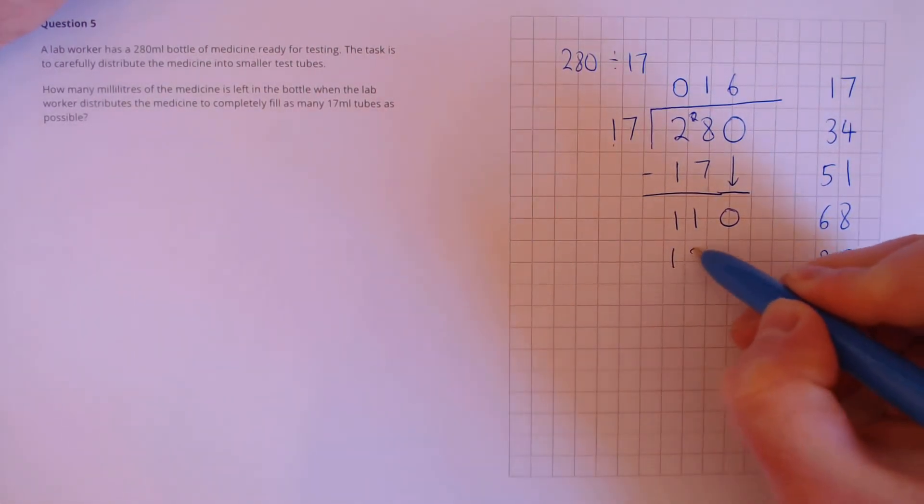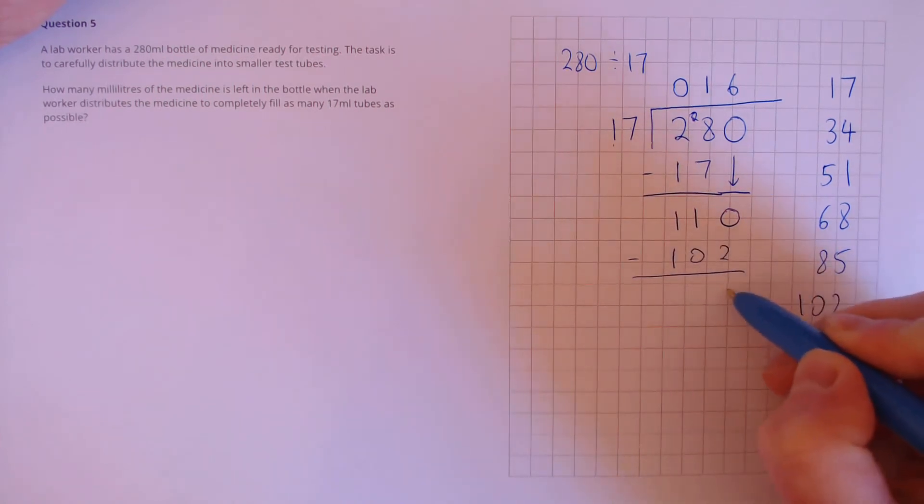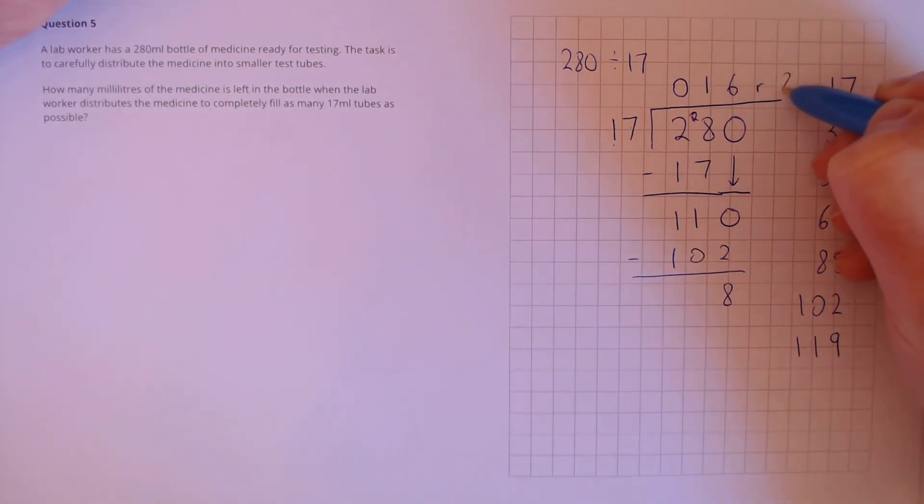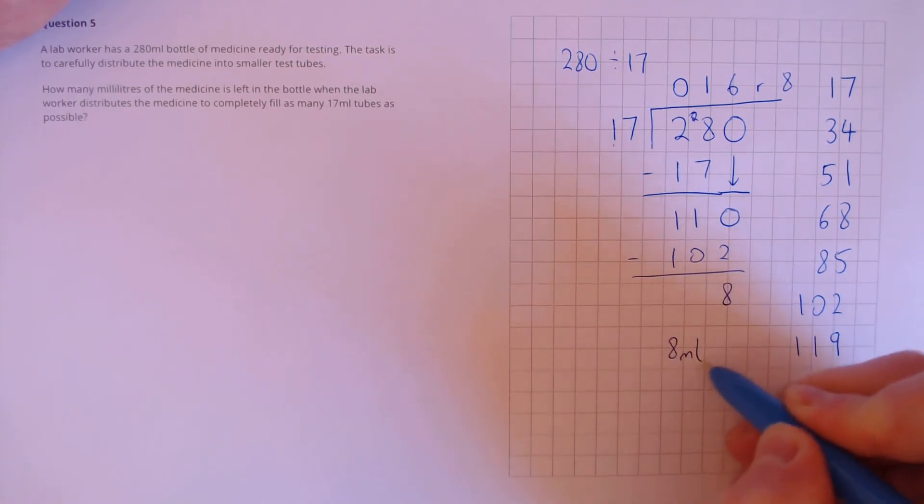Next take away 102. From this that leaves us with 8. Does 17 go into 8? No. So that's our remainder. 16 remainder 8. The answer then is 8 millilitres.